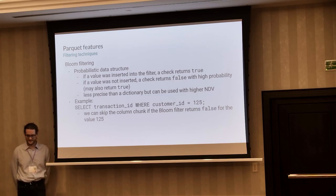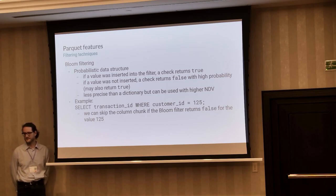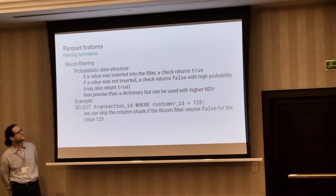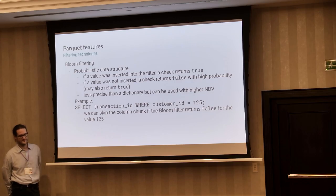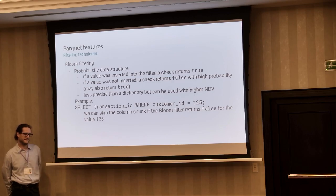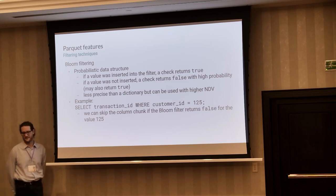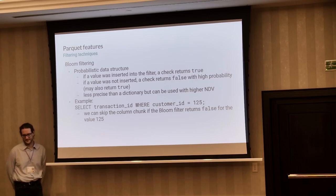If we are only interested in some specific values and the dictionary does not contain these values, then we can discard the whole column chunk. The third technique is bloom filtering. It is not connected to any specific encoding — it is additional metadata that can be added to Parquet files at the column chunk level. A bloom filter is a probabilistic data structure where if you insert a value and check it later, the filter will always return true. But if you check for a value that was not inserted, it will probably return false, though it is allowed to return true. Taking this same example query, if the bloom filter returns that 125 is not in the filter, then we can be sure that the page does not actually contain it.